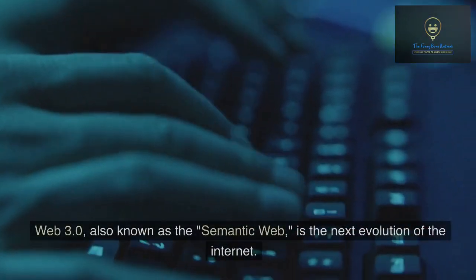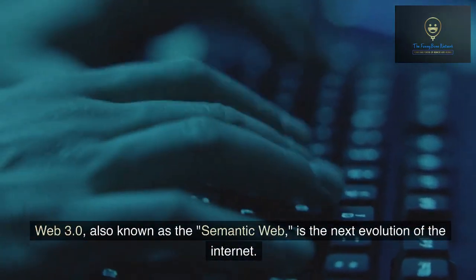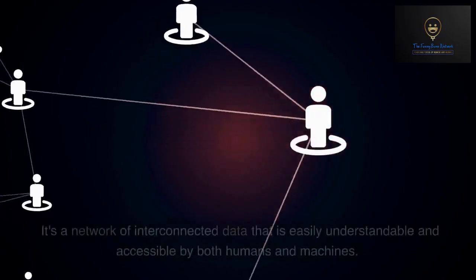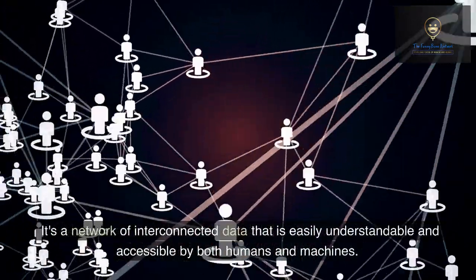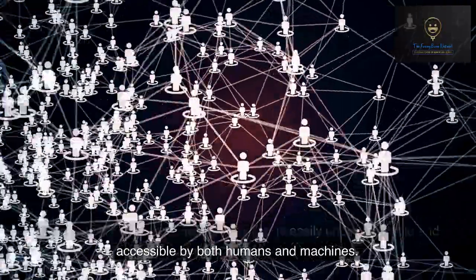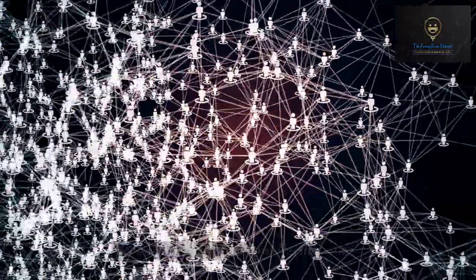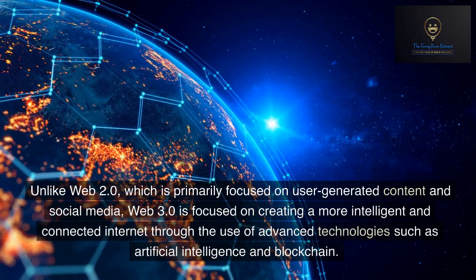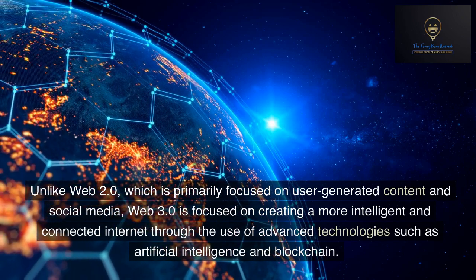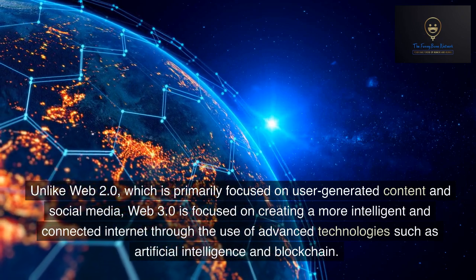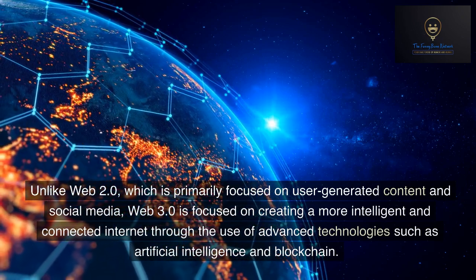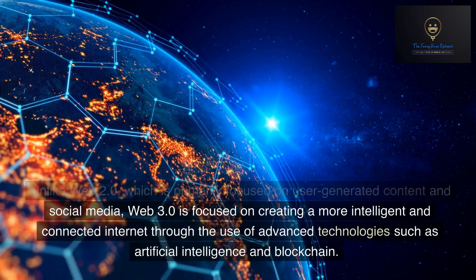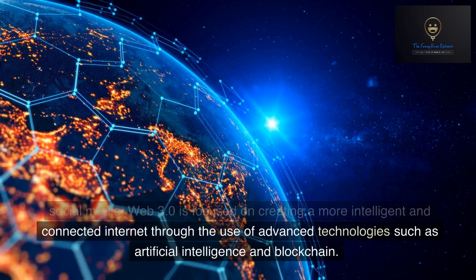Web 3.0, also known as the semantic web, is the next evolution of the internet. It's a network of interconnected data that is easily understandable and accessible by both humans and machines. Unlike Web 2.0, which is primarily focused on user-generated content and social media, Web 3.0 is focused on creating a more intelligent and connected internet through the use of advanced technologies such as artificial intelligence and blockchain.